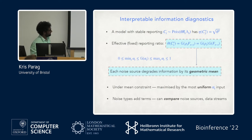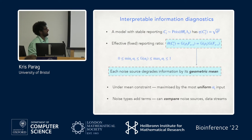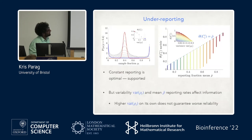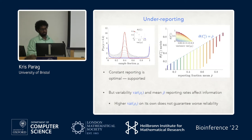From design theory we know the mean lies between the minimum and maximum, and given some input alpha constrained to a standard mean, the most uniform input maximizes the geometric mean. So let's look at some examples.